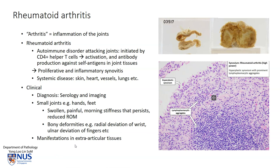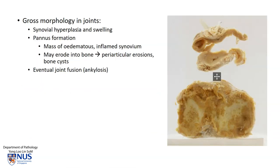There are also extra-articular manifestations, but we will focus here on the joint-related pathology. In terms of gross morphology involving the joints, there is synovial hyperplasia, swelling, and edema, and eventually this can give rise to pannus formation, and this is what we see here. It's essentially a mass of edematous and very inflamed synovial tissue. This pannus may overgrow into the actual articular surface, and it can erode into the bone in the periarticular tissues, giving rise to bone cysts.